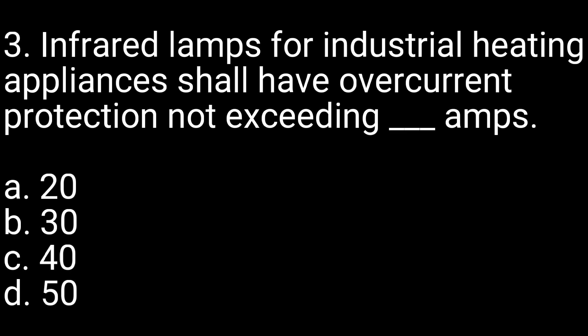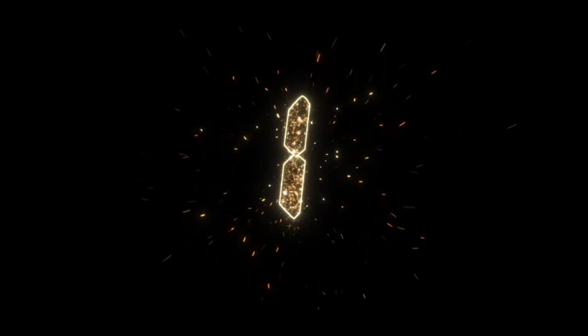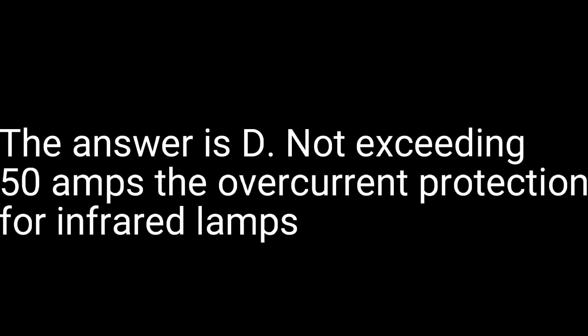Question 3. Infrared lamps for industrial heating appliances shall have overcurrent protection not exceeding how many amps? A. 20. B. 30. C. 40. D. 50. The answer is D.